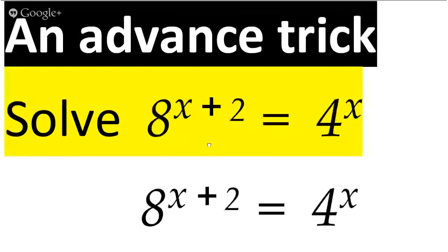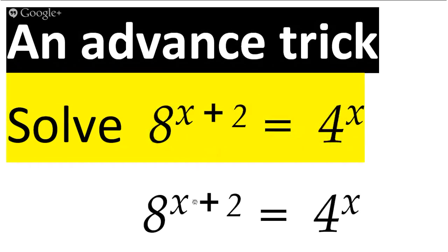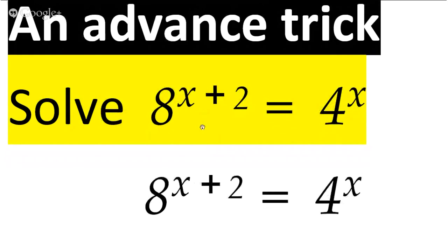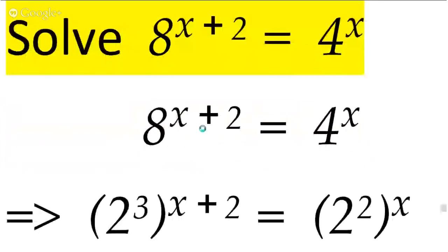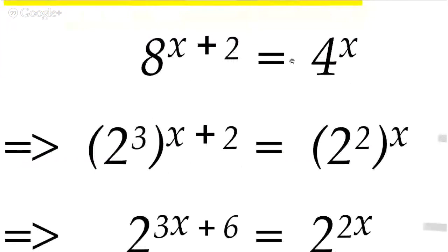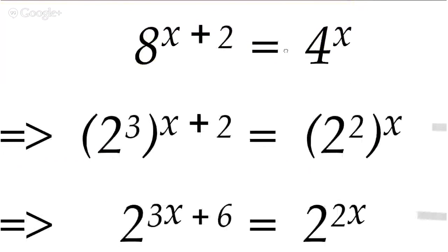Let's see what we are going to talk about. We're going to solve this equation here. The basic trick is this: you have to turn the eight and the four into something with the same base. Both eight and four can be made from two to the power of something. Eight is two cubed and four is two squared.